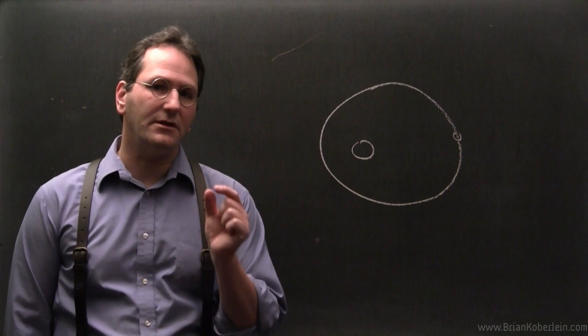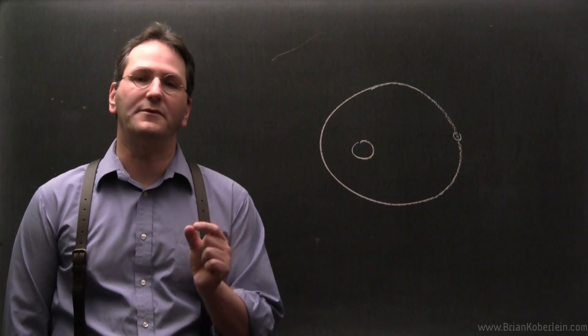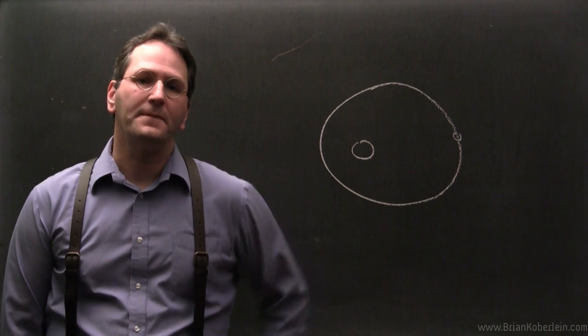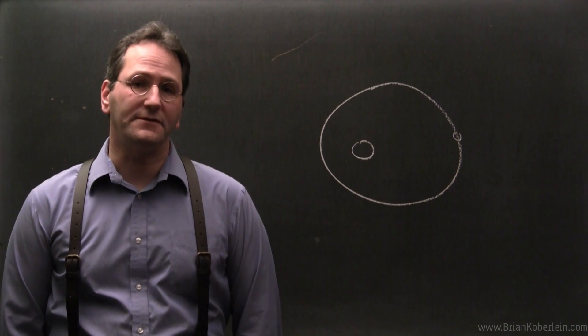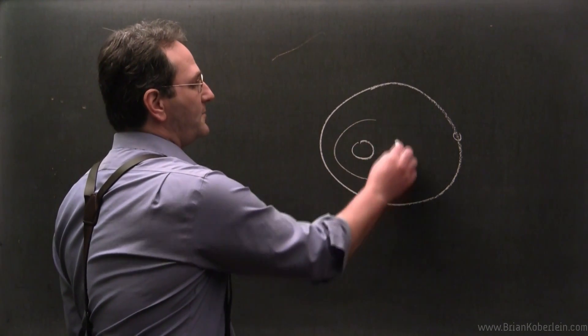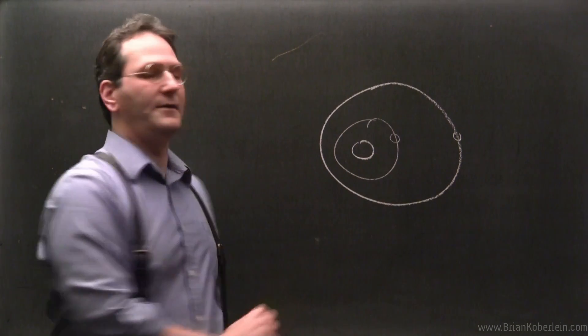But there was this extra little bit. There was this little bit that was about a second every orbit that wasn't accounted for by the other planets. So one of the proposals was that within the orbit of Mercury would be another planet that they named Vulcan.